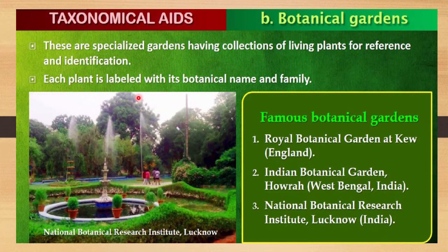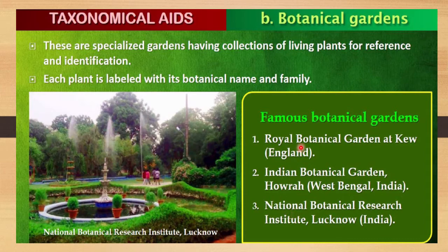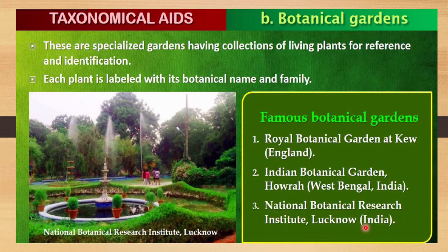Each plant in a botanical garden is labeled with its botanical name and family, so visitors can learn the scientific name and family of any plant. Famous botanical gardens include the Royal Botanical Garden at Kew, England; the Indian Botanical Garden in West Bengal, India; and the National Botanical Research Institute in Lucknow, India.